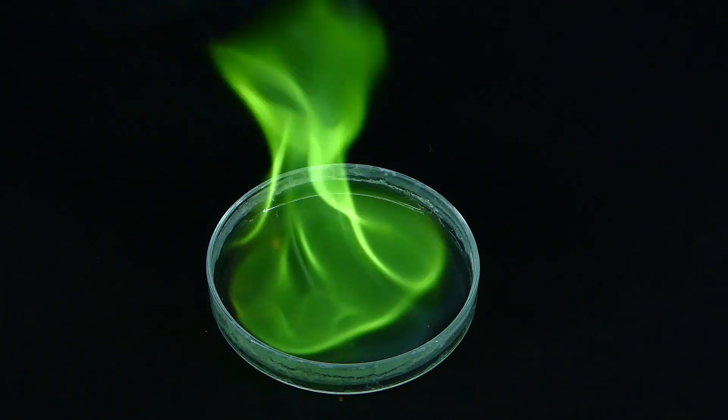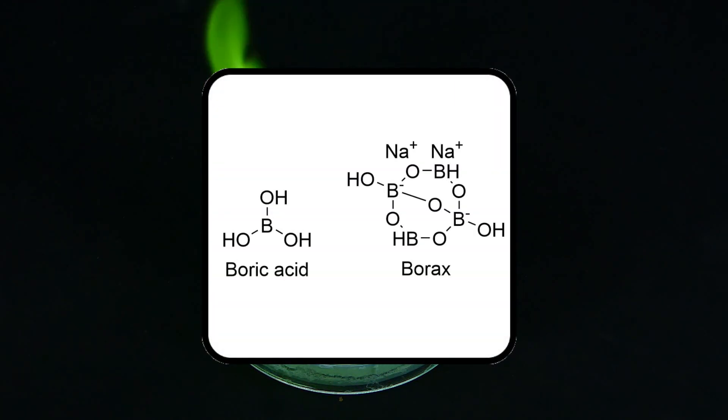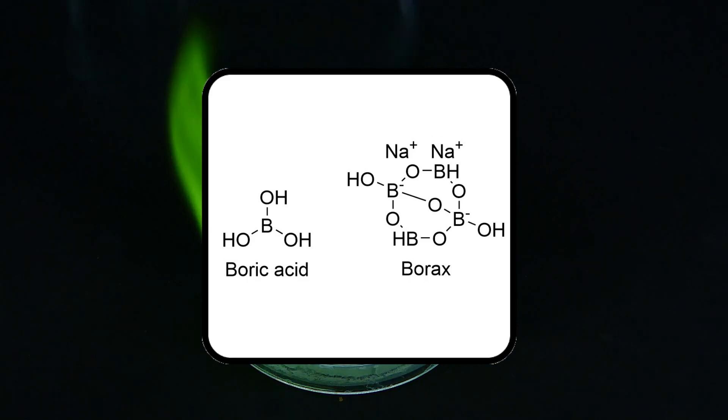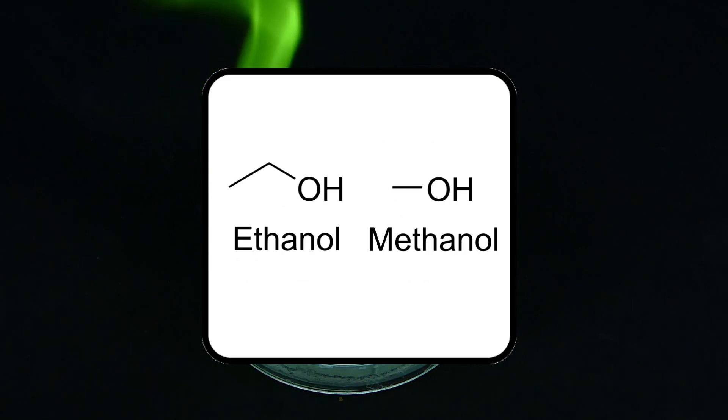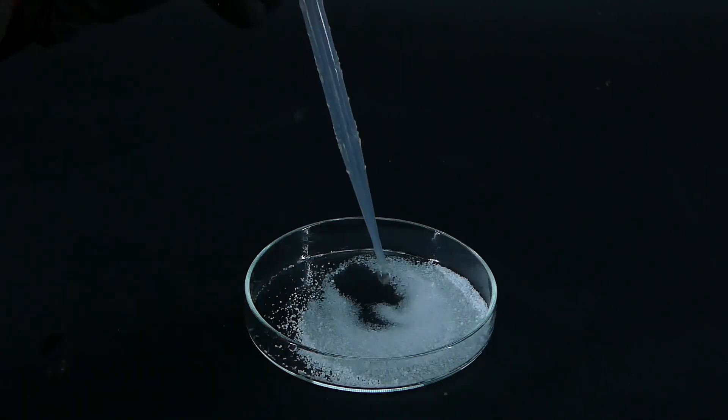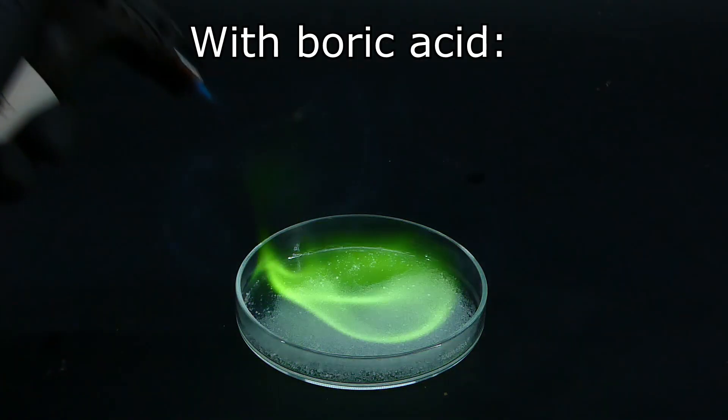All you need to get is some kind of boron-containing compound like borax or boric acid, and a flammable solvent like ethanol or methanol. If you mix these ingredients and ignite them, you have your green flame. It is really that easy.